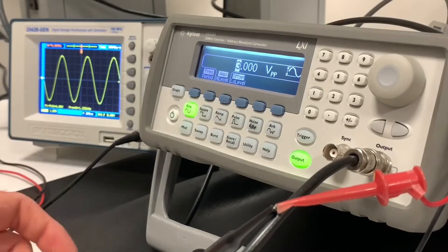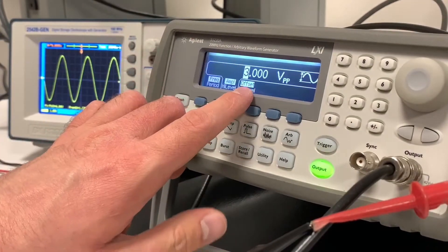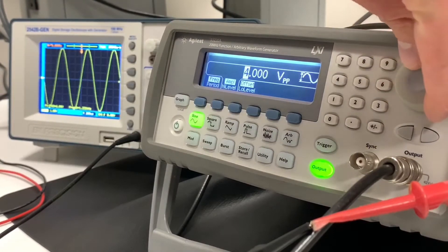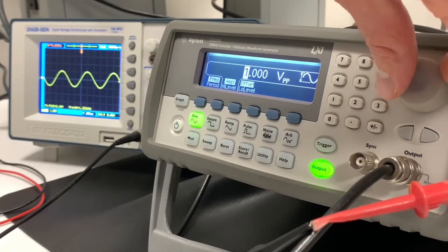So I can make further changes now. I still have the amplitude selected, and I'll take the knob and just turn it. You can see that as I turn this knob, it's changing the amplitude of the signal coming out.